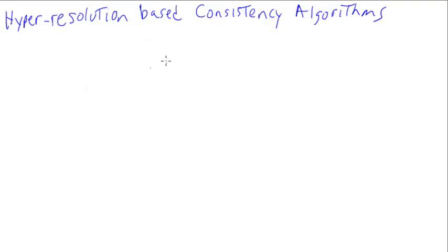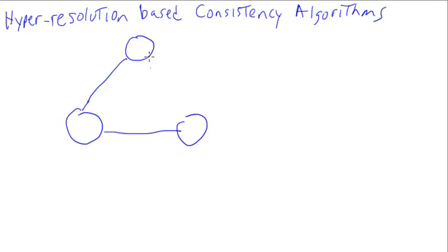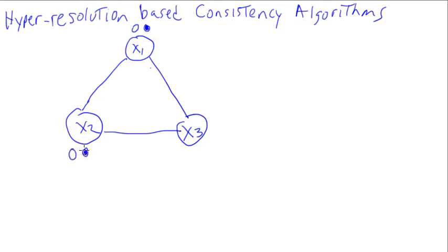Let's talk about hyper-resolution based consistency algorithms and the methods for doing them. I'm going to use this simple example — the graph coloring problem — to show you how this works. We have a little graph with variables x1, x2, and x3. Each variable can be white or blue.